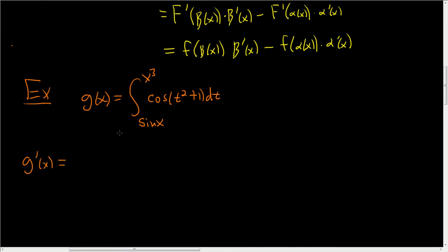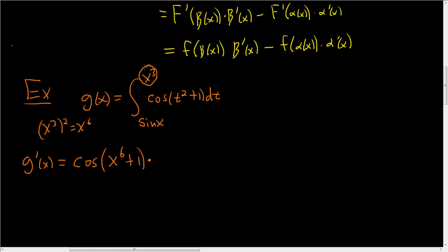For g prime of x, first you take the upper limit x cubed and plug it in for t. So you get cosine of x cubed squared, which is x to the 6, plus 1. Then you multiply by the derivative of x cubed, which is 3x squared.